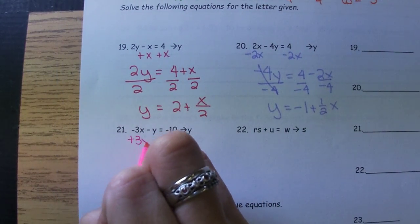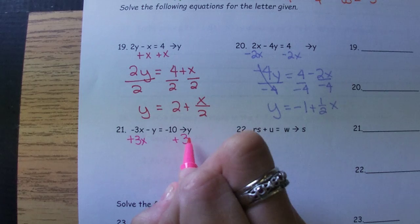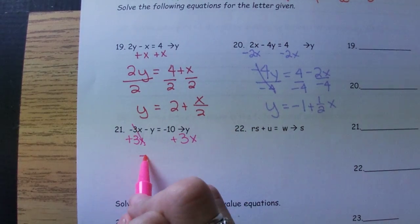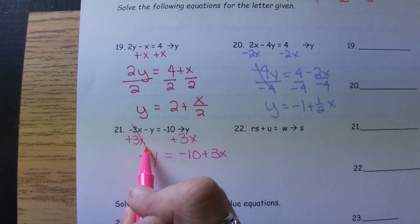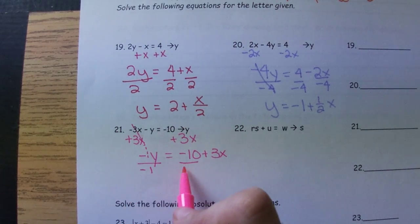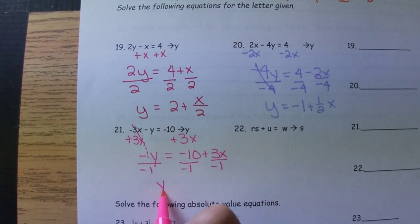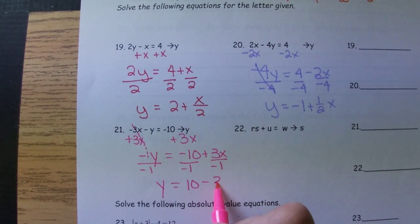We're at 21. We have to move our X first. So that's a negative Y. Which means there's really a negative 1 there. Say Y equals 10 minus 3X.